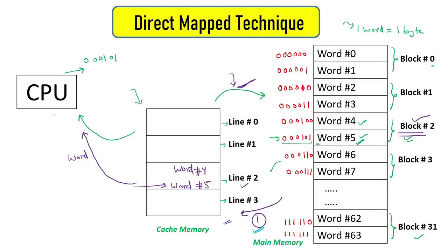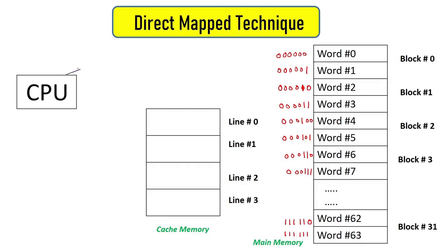The second place where memory mapping technique works: if word 5 is already in cache and the CPU now asks for word 4, its address is generated and data is first searched in cache. How is word 4 searched inside cache memory? This answer is given by the memory mapping technique. We will see how the direct mapping technique answers this question — how data is searched inside cache memory.